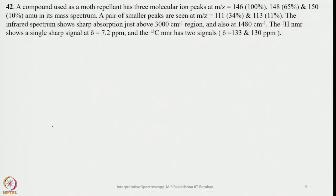Now let us look at one more example. A compound used as a moth repellent has 3 molecular ion peaks at m/z = 146 (100%), 148 (65%), and 150 (10%) in its mass spectrum. A pair of smaller peaks are seen at 111 and 113. The IR spectrum shows sharp absorption just above 3000 and at 1480 cm⁻¹, characteristic of an aromatic group. The 1H NMR shows a sharp singlet at 7.2 ppm. The 13C NMR shows two signals at 133 and 130 ppm, almost very close. With this information we must find the structure.